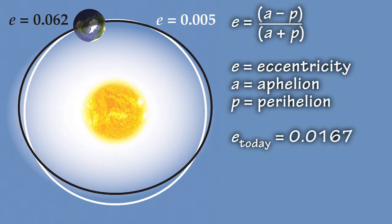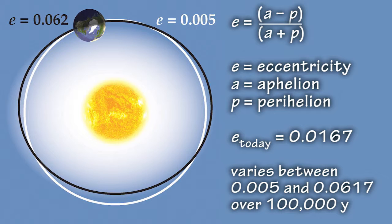Currently, Earth's orbit has an eccentricity of 0.0167, but it oscillates between 0.005 and 0.0617, more elliptical, with an average periodicity of about 100,000 years.